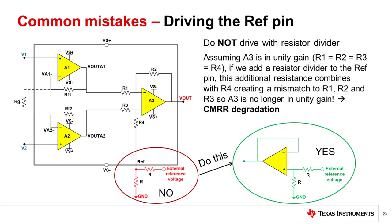That is because if we assume A3 is in unity gain, any additional resistance added to the reference pin will combine with R4, which will then create a mismatch to R1, R2, and R3. This is why it is recommended to keep the impedance on this pin less than a few ohms depending on the part to maintain high accuracy. But even this recommendation and rule of thumb should be taken with care as this value still depends on R3 and R4 within the chip.